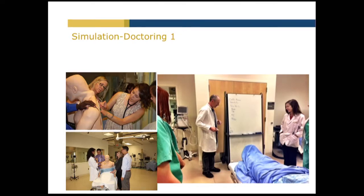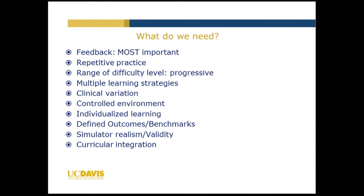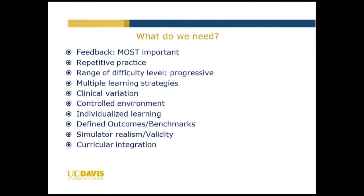The goal is to allow students to enhance their communication skills as well as their critical thinking skills in a more one-on-one manner. When it comes to what we need our students to know, feedback is the most important — in situations where we're allowed to use the simulator to give the most appropriate feedback for our early learners. Repetitive practice and range of difficulty are key, with a progressive nature in regards to difficulty. Simulation also provides learners multiple learning strategies over a course of one to four years in a given curriculum. There are multiple opportunities for clinical variation, and this is also a very safe and controlled environment. We can individualize learning and use simulation to not only assess our learners early on, but also provide progressive assessment as they go through their four years of training.